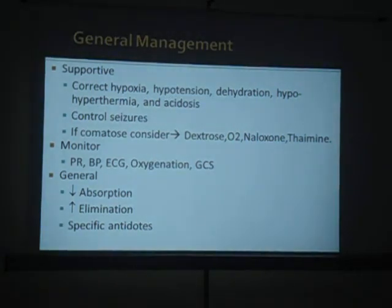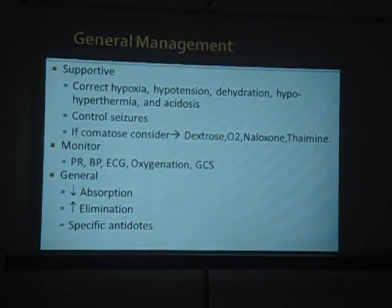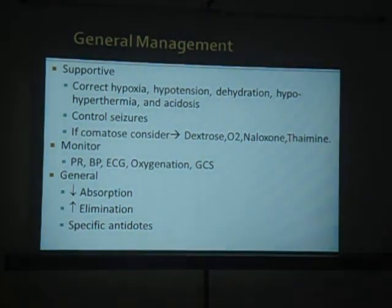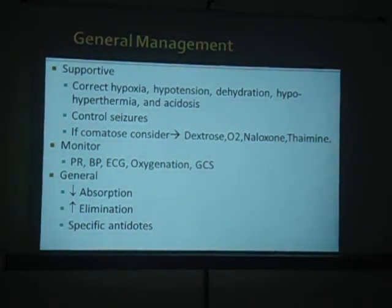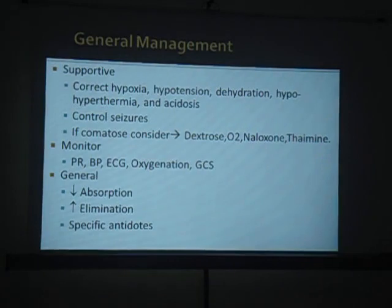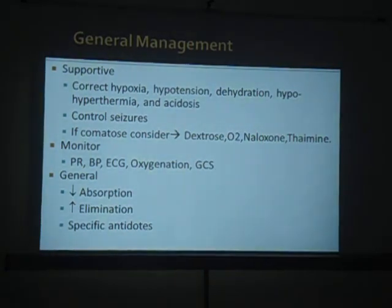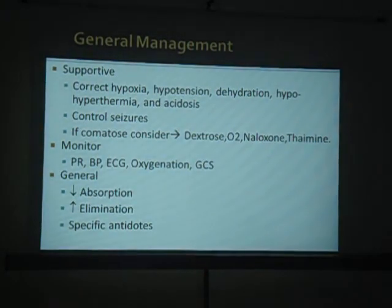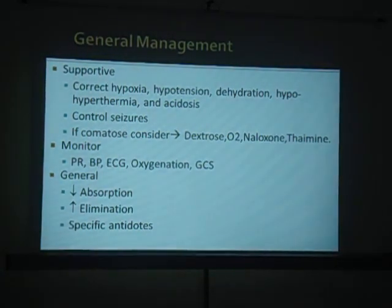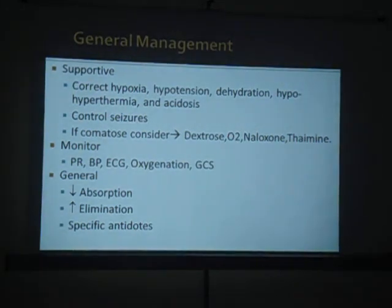What are the general measures we need to take? General measures: first, ABC - airway, breathing, circulation - all these should be maintained. For supportive care, first correct hypoxia - we can give oxygen or make the airway patent. If there are secretions, we need to suction them to keep the airway patent.